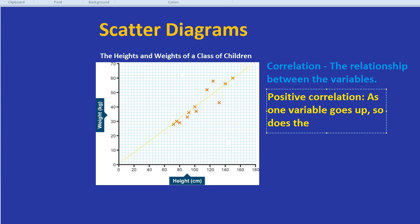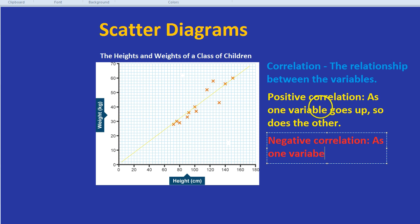The opposite would be negative correlation. A negative correlation, as you can guess, is where as one variable goes up, the other variable goes down.